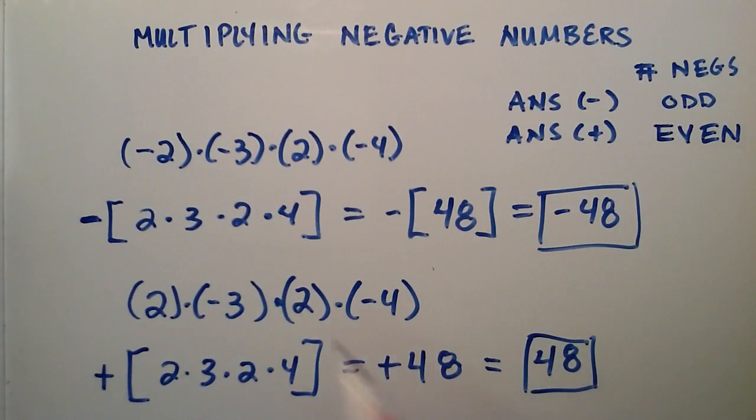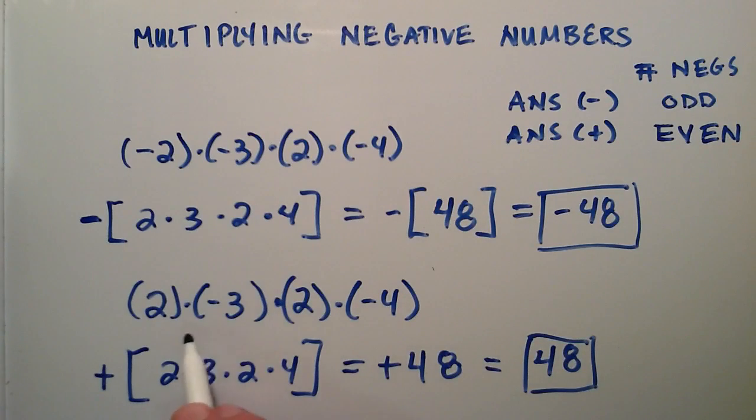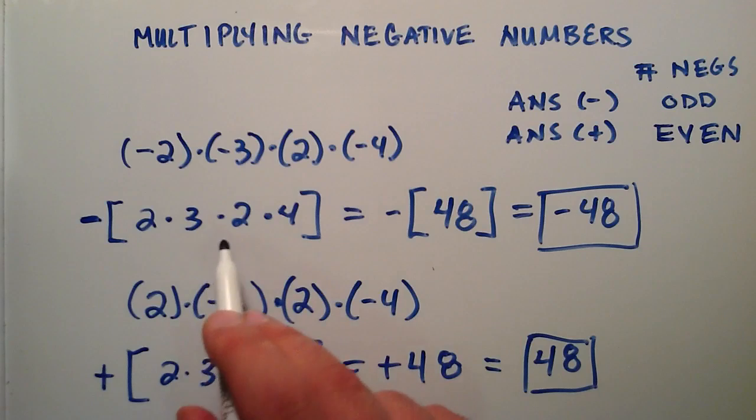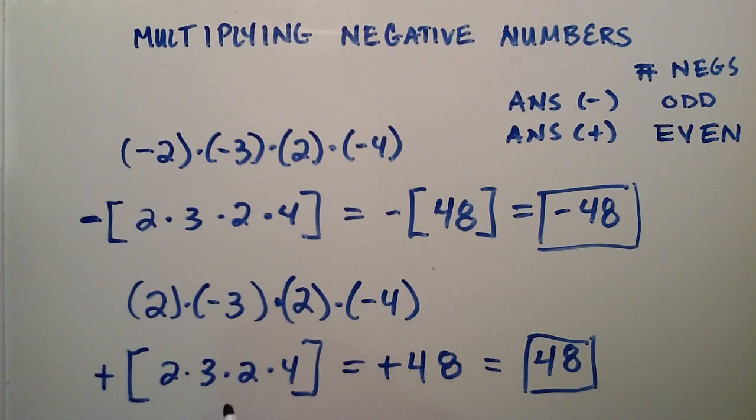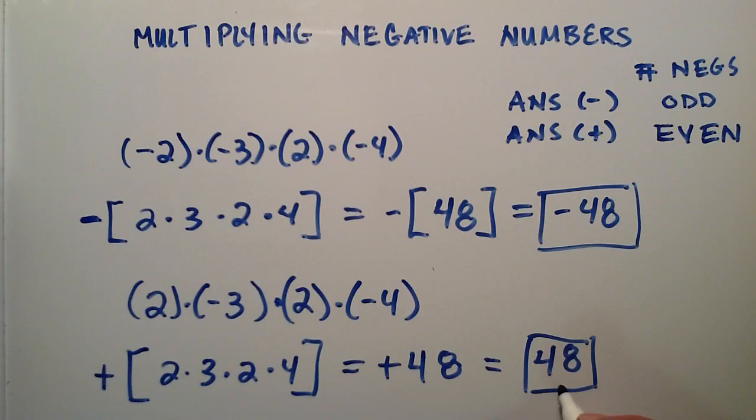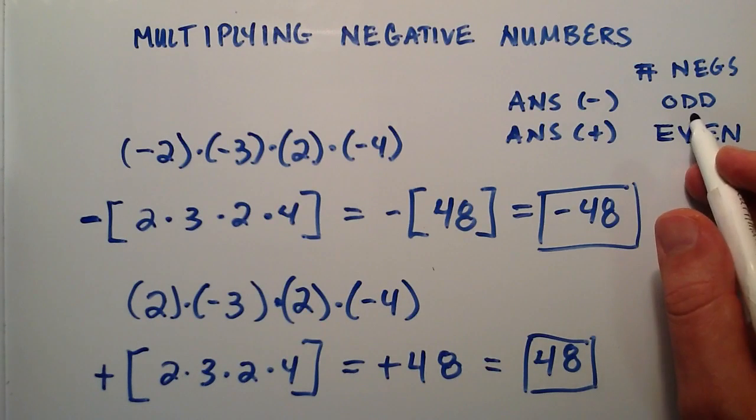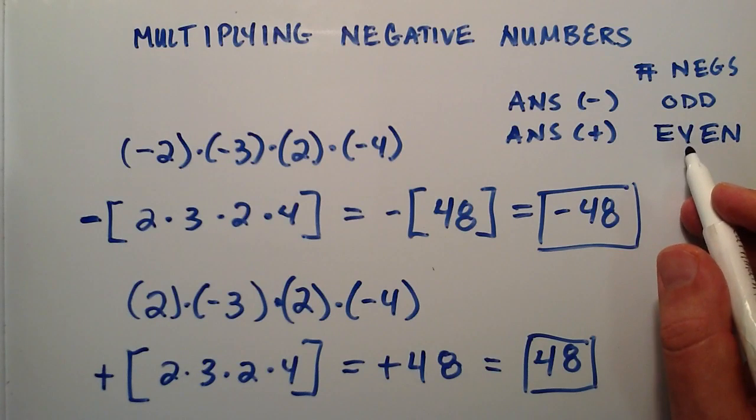So in one case we had an odd number of negatives, and in the other case we had an even number of negatives. Really, the only thing that changes with your answer when you're multiplying negatives is it's either going to be negative or positive, and the way that you determine that is whether or not you have an odd number of negatives or an even number of negatives.